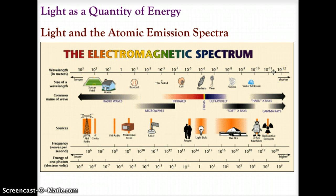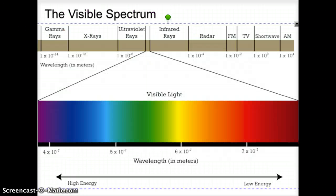The visible spectrum is what we'll primarily focus on because that's what we use in flame tests to determine which elements we're dealing with. We use the mnemonic ROY G BIV — red, orange, yellow, green, blue, indigo, and violet — the colors of the rainbow, because it is the combination of all white light that creates the colors we see. The visible spectrum is the range of waves that our eyes can absorb and see.